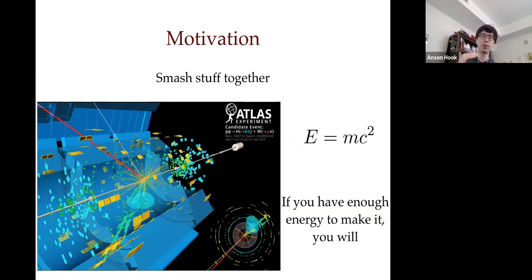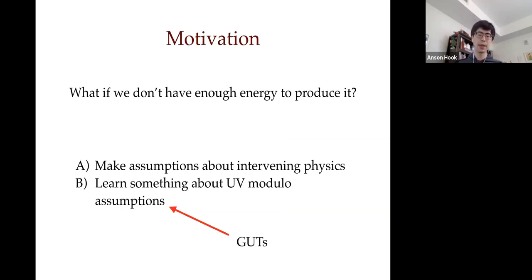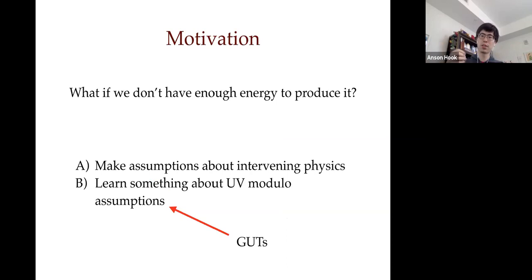This approach is great for studying the theory up to a certain energy scale. As soon as you don't have enough energy, you have to start making assumptions. If something is too massive we can't create it, so we make assumptions about the intervening physics — for example, understanding the atomic scale and wanting to understand the nuclear scale, making assumptions about what goes on between where we can explore and where we want to know.